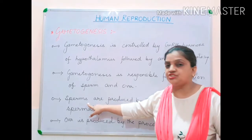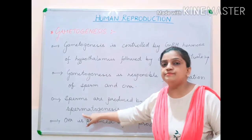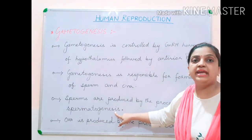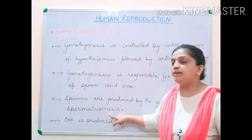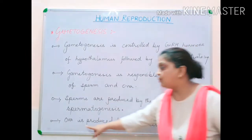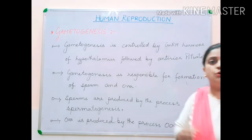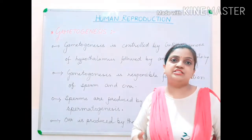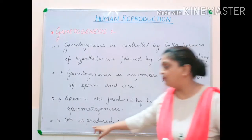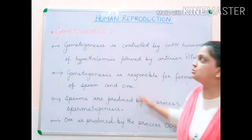Gametogenesis is responsible for the formation of sperms and ova. The process by which sperms are produced is called spermatogenesis — spermato derived from sperms, and genesis means to generate. The process by which ova is produced is called oogenesis — oo derived from ova, and genesis means to produce. These are the two processes we are going to study in detail under gametogenesis.